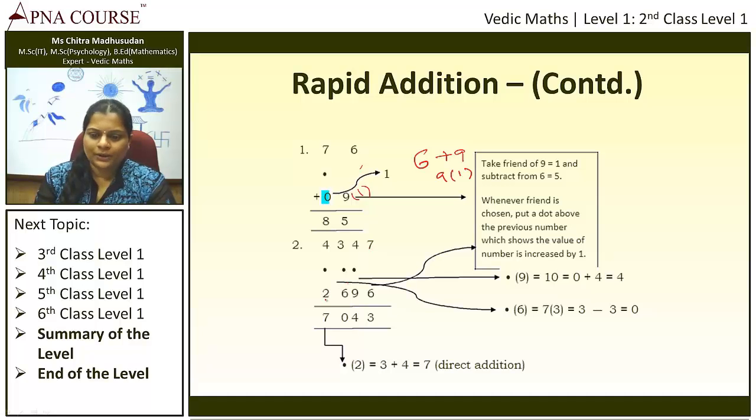4347 plus 2696. In this case again, 7 plus 6 is not possible. So 6's friend is 4. Initially, you can write the numbers here in bracket. Later you can avoid it, but in the initial stage you can write the numbers in bracket here, minus 4, so that it will be easy for you to do the calculation.